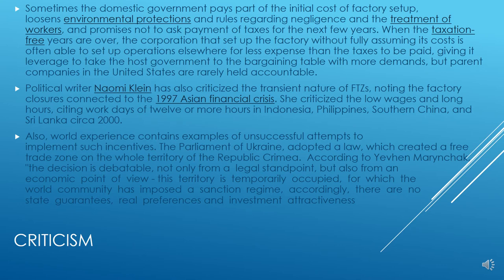Sometimes the domestic government pays part of the initial cost of factory setup, loosens environmental protections and rules regarding negligence and the treatment of workers, and promises not to ask for payment of taxes for the next few years. When the tax-free years are over, the corporation that set up the factory is often able to set up operations elsewhere for less expense than the taxes to be paid, giving it leverage to take the host government to the bargaining table with more demands. But parent companies in the United States are rarely held accountable.